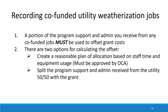The final area of fiscal monitoring is a review of co-funded weatherization jobs. We want to remind you that when you record co-funded utility jobs, a portion of the program support and admin you receive from any co-funded job must be used to offset the grant cost. There are two approved options for calculating the offset. The first is to create a reasonable plan of allocation based on staff time and equipment usage, which you can submit to OCA but should be approved before you begin using it. Secondly, you can split the program support and admin you receive from the utility 50-50 with the grant.